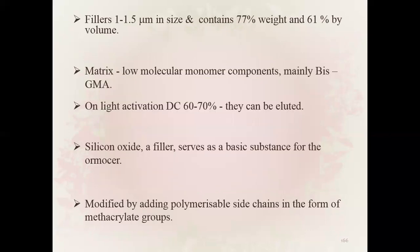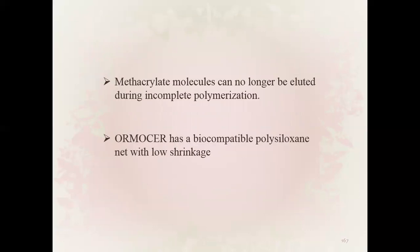Ormocer fillers: 1 to 1.5 microns in size, containing 77 percent by weight and 61 percent by volume. Matrix: low molecular monomer components mainly Bis-GMA, light activation, 60 to 70 percent can be eluted. Silicon oxide filler serves as a basic substance for Ormosin, modified by adding polymerizable side chains in the form of methacrylate molecules, which can no longer be eluted during incomplete polymerization. Ormosin has a biocompatible polysiloxane network with low shrinkage.